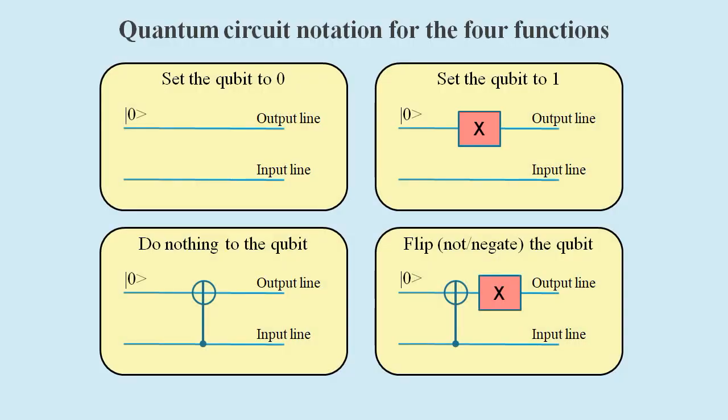Then using these two lines we can construct the quantum circuit notation for the four possible functions, which are set the qubit to zero, set the qubit to one, do nothing to the qubit, and flip the qubit. And so one of these is inside the black box.